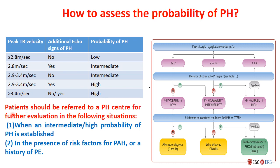Patients should be referred to a pulmonary hypertension center for further evaluation in the following situations: number one, when an intermediate or high probability of pulmonary hypertension is established; and number two, in the presence of risk factors for pulmonary arterial hypertension or history of pulmonary embolism.